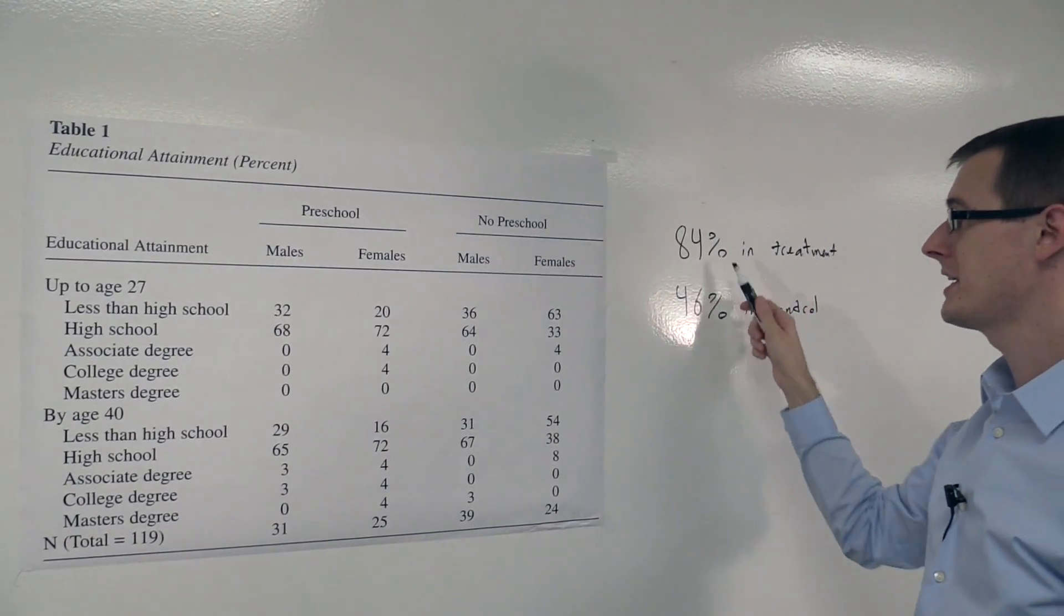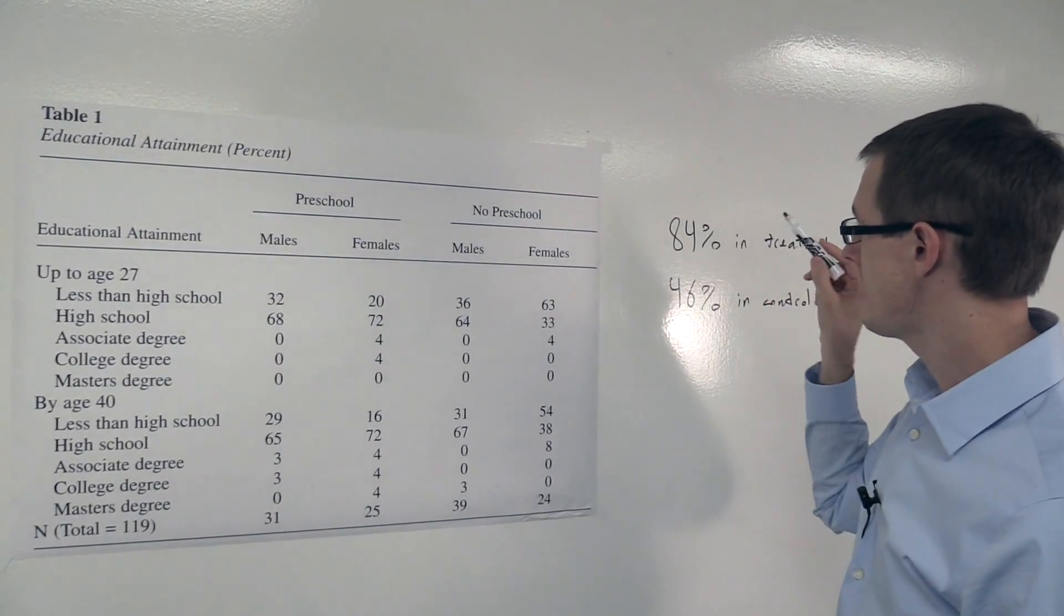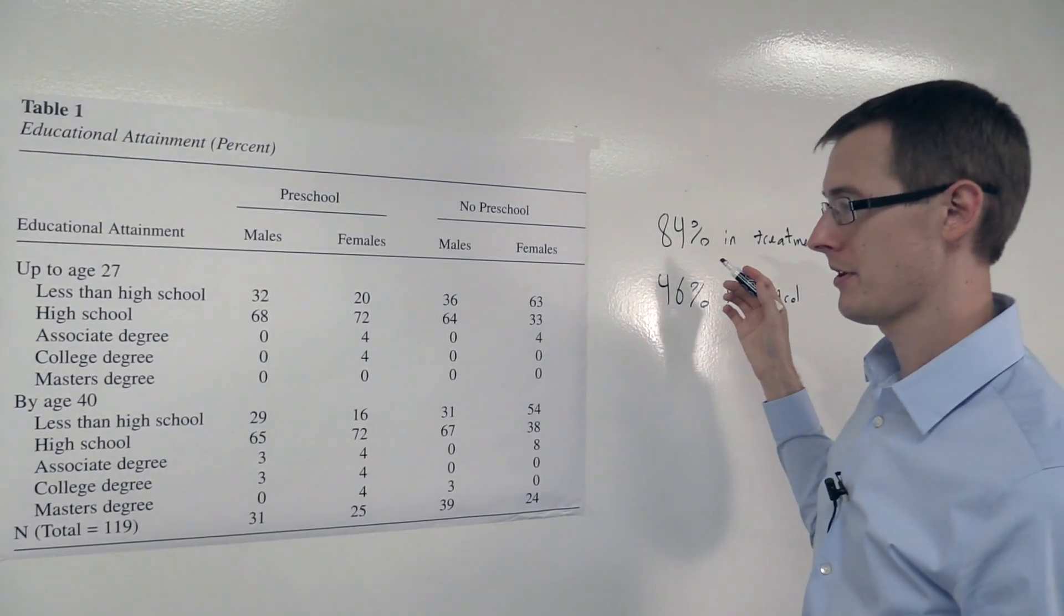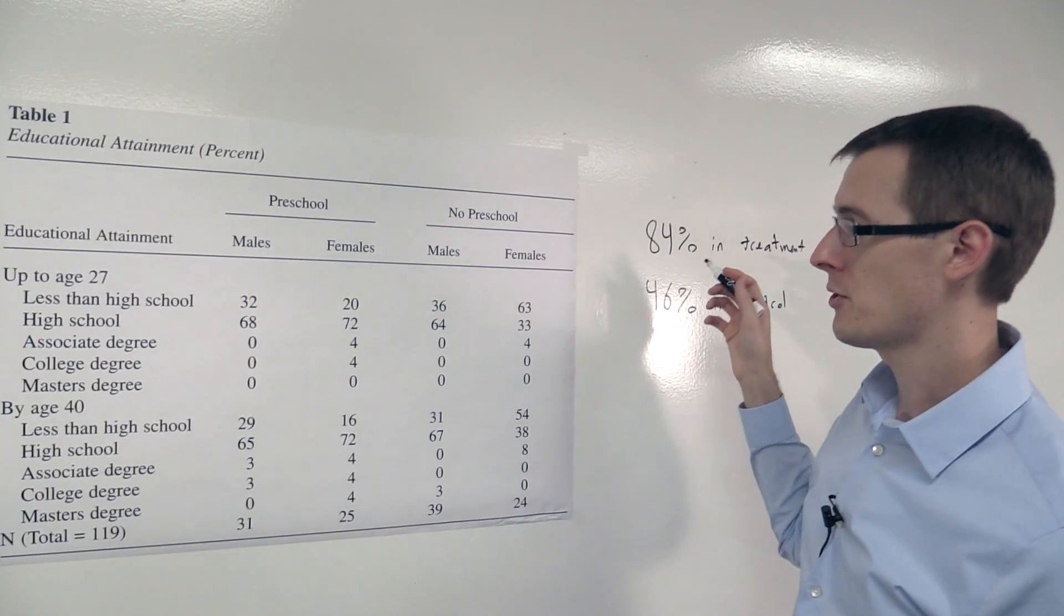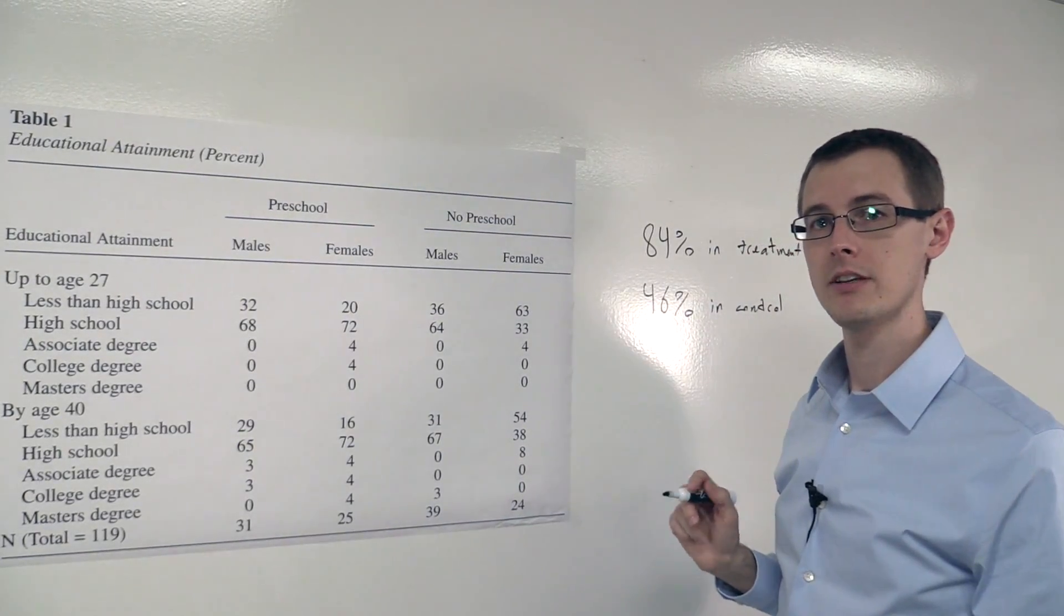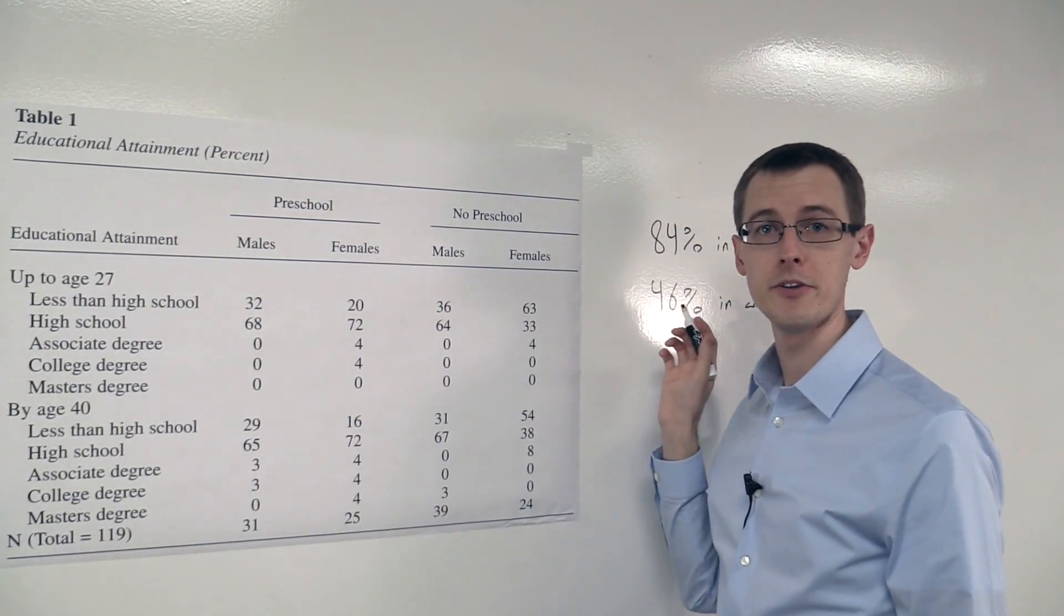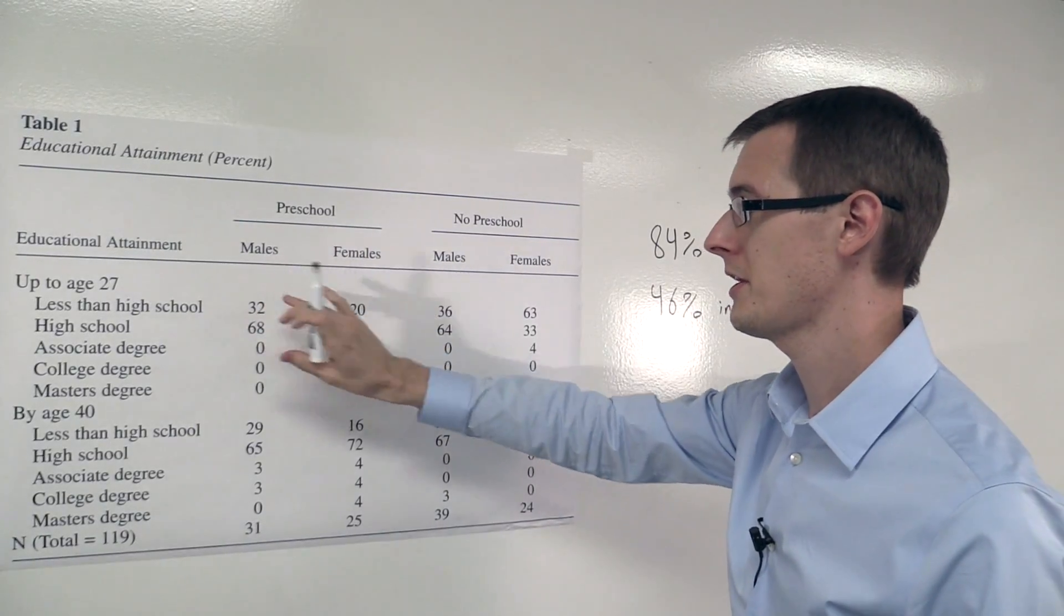So that's a pretty big difference. It looks like for females, getting preschool almost doubled the percentage of students who had at least a high school education. Okay, so that looks really good, very, very good effect of preschool. Now let's look at the effect for males.